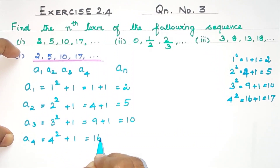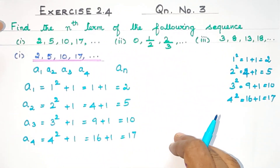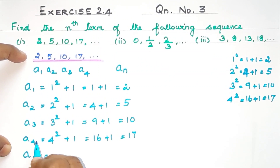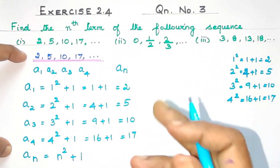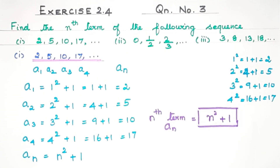4 squared is 16, plus 1 — we know this pattern. So all of them follow this rule. In the sequence, if n is squared and plus 1, then here n squared plus 1 gives us the general term. So the nth term of the sequence is An = n² + 1. Shall we move on to the second question?